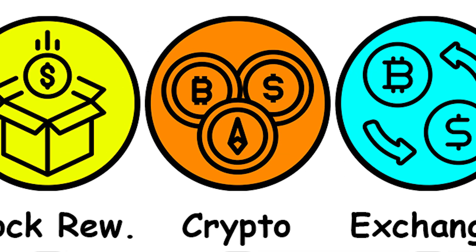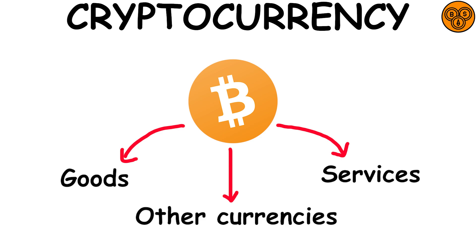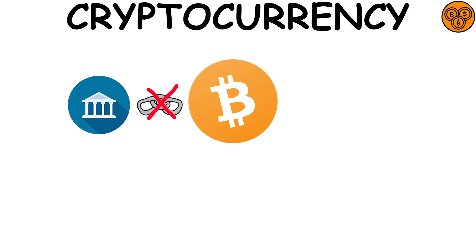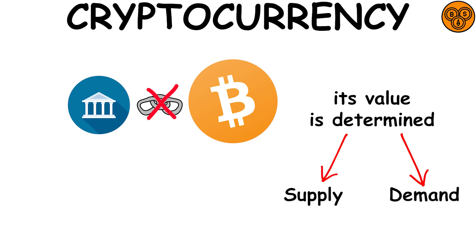Cryptocurrency: it is a digital currency that can be exchanged for goods, services, or other currencies. Being detached from sophisticated pricing mechanisms, its value is determined only by supply and demand.